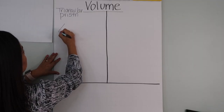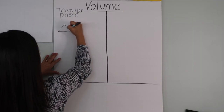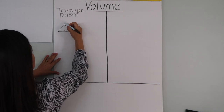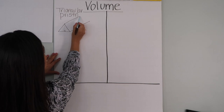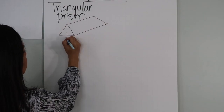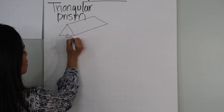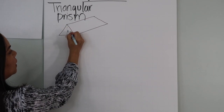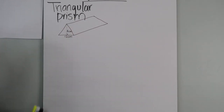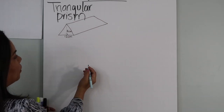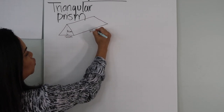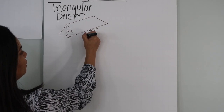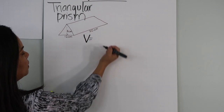It simply looks like a tent. The base of the triangle is 12 centimeters, the height of the triangle is 8 centimeters, and the height of the triangular prism is 20 centimeters.